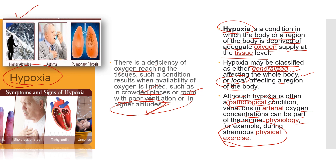Hypoxia can also occur due to conditions like asthma or pulmonary fibrosis at higher altitudes. The symptoms of hypoxia include shortness of breath, tachycardia, unconsciousness, and the hands may turn blue if they are not receiving a proper supply of oxygen.